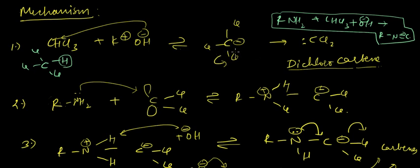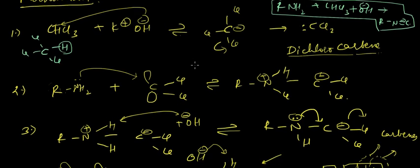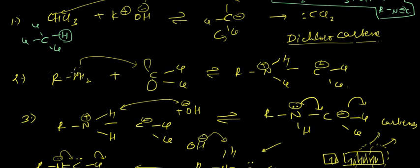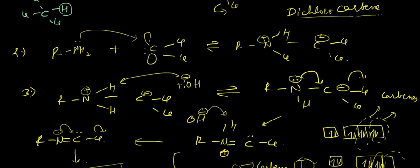Then Cl⁻ takes its bond pair and leaves, resulting in dichlorocarbene formation. In the second step, the primary amine, on seeing the carbene's unfilled p orbitals, donates its lone pair into those unfilled p orbitals, creating a positive charge on the nitrogen and a negative charge on the carbon atom bearing two Cl atoms and two H atoms on nitrogen.